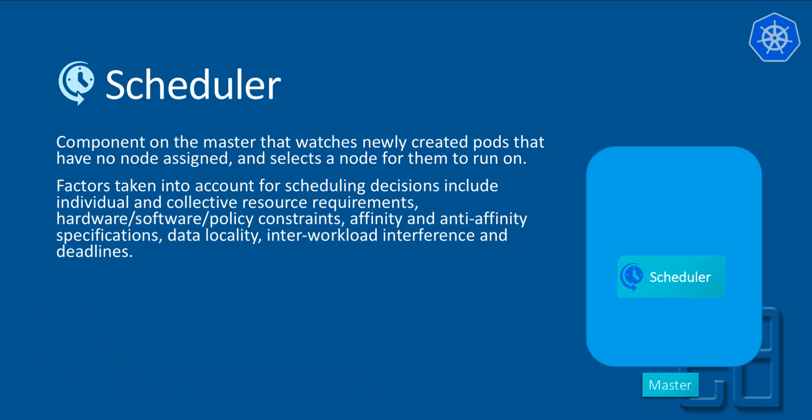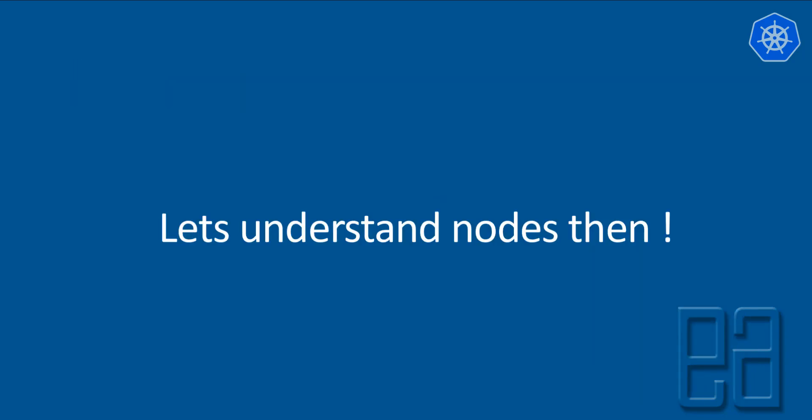The scheduler checks every time if a node has been created and is healthy and running. It is the component responsible for making sure that nodes are running without any problem and that pods created within the nodes are healthy and working fine. These important things are all taken care of by the scheduler. We have to understand these building blocks to leverage the power of Kubernetes in greater detail in upcoming videos, where we'll start working practically. Next, let's understand nodes in our next video.